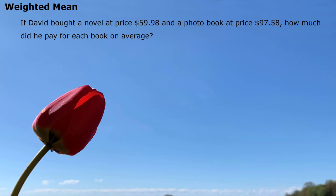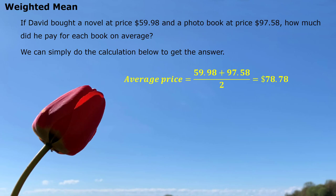Here we have an example. If David bought a novel at a price $59.98 and a photo book at a price $97.58, how much did he pay for each book on average? We can simply do the calculation below to get the answer: put the two prices together divided by two, and we get the average price for each book — $78.78. This is the regular average, or we can call it the arithmetic average or arithmetic mean.